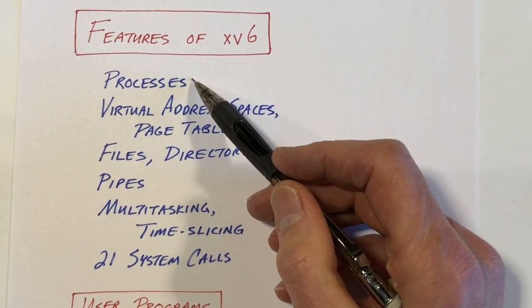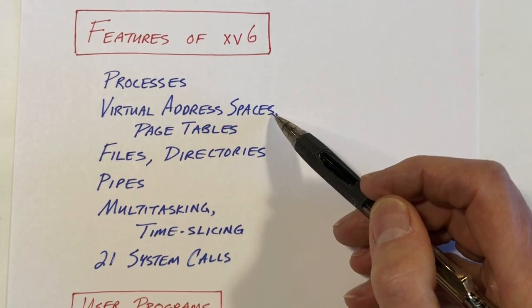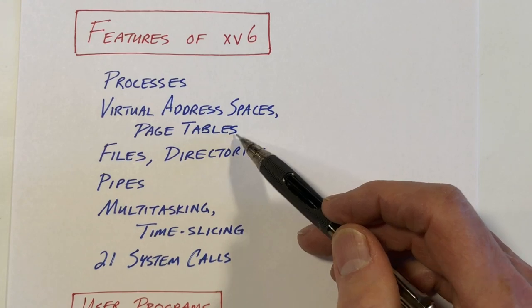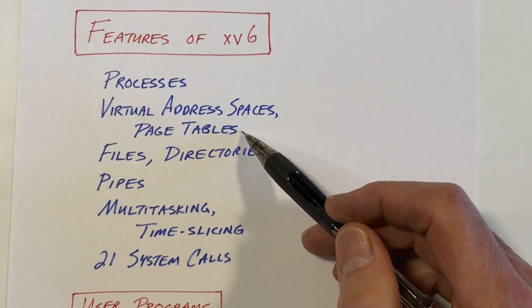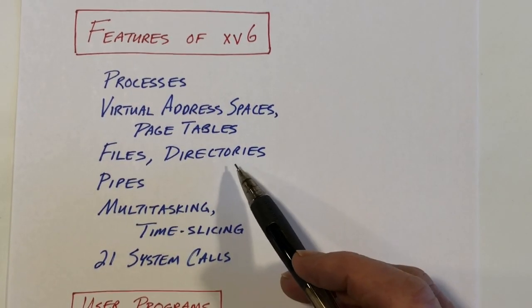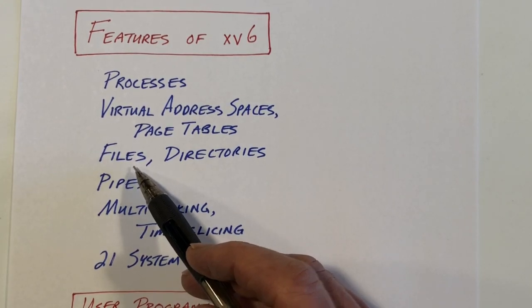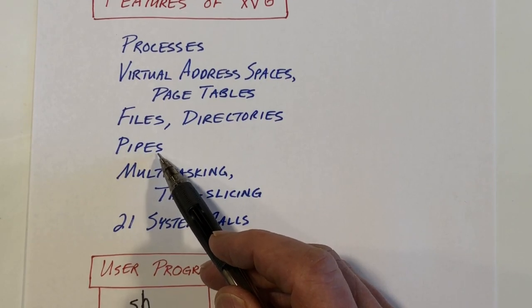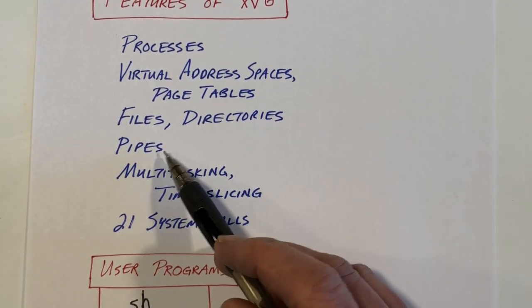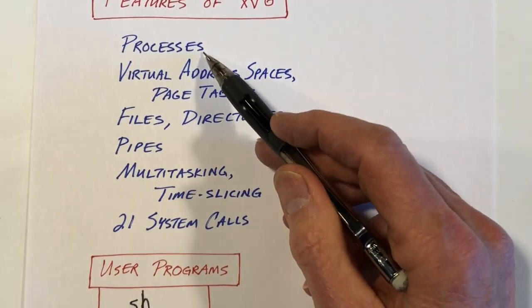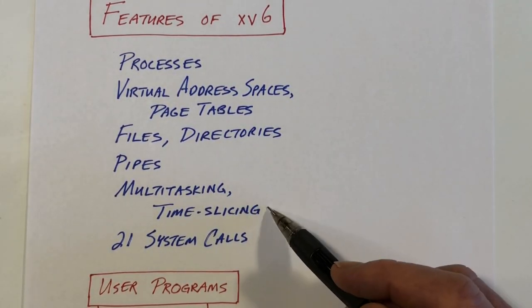It's got processes. These processes run in their own virtual address spaces. So there are page tables for each address space to support the virtual address spaces. The operating system supports files, Unix-like files, and the directory hierarchy. You can pipe data from one program to another program. Of course, there's a timer interrupt. So there is multitasking. The various processes are running in parallel with time slicing.